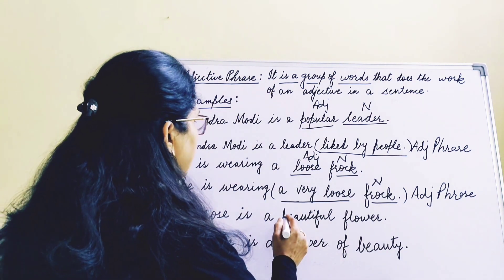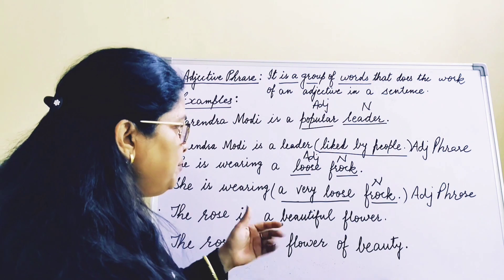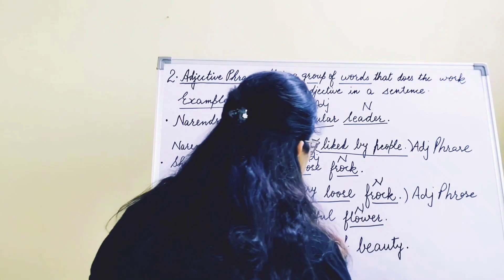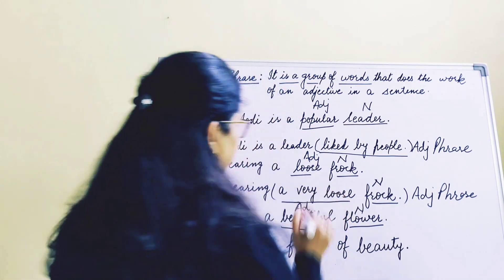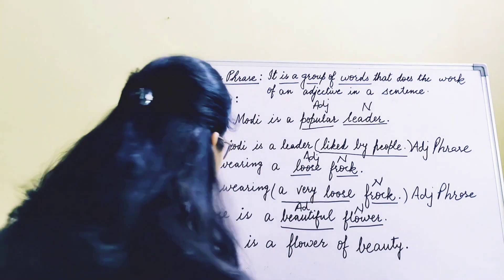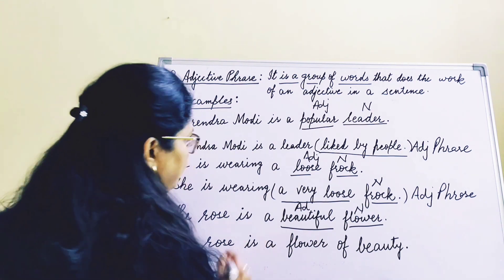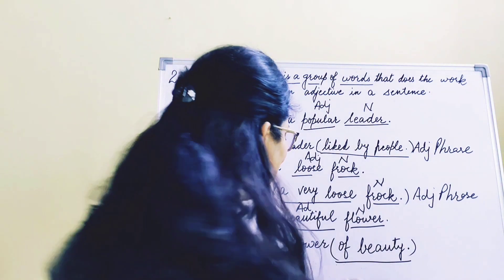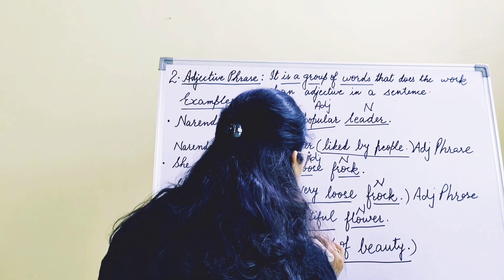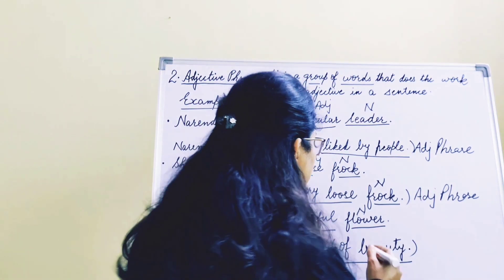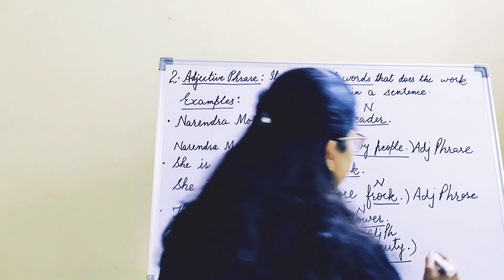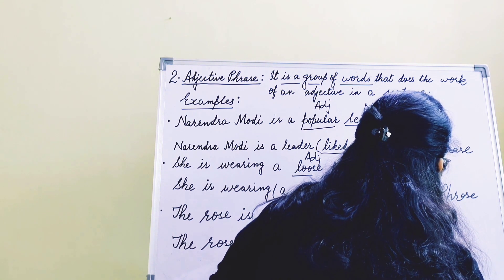Third example: 'The rose is a beautiful flower.' Flower is a noun and beautiful is an adjective — but it is one word. Now, 'the rose is a flower of beauty.' Flower is the noun. What kind of flower? 'Of beauty.' So 'of beauty' is an adjective phrase — a group of words doing the work of an adjective.